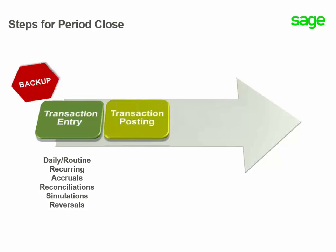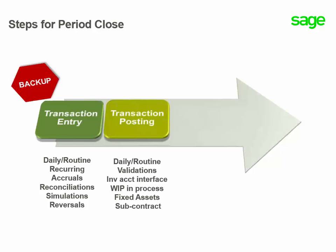Then you post all necessary transactions, which include those daily routine transactions which do require validating and posting. Also, your inventory interface, which includes stock movements and adjustments. You run WIP and process for manufacturing, which is run from the costing module.